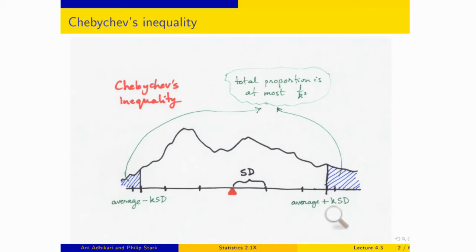So in summary, we've walked the same distance on either side of the average, and Chebyshev's bound says that if you look at the two tails together, the proportion that's at or bigger than the average plus K SDs, at or smaller average minus K SDs, that total proportion is at most one over K squared.